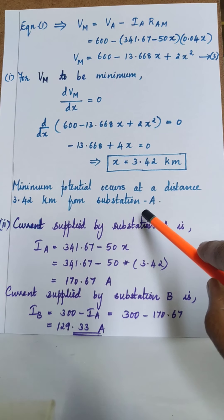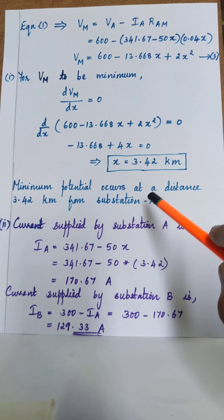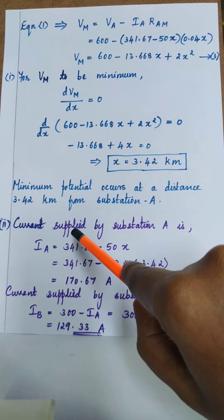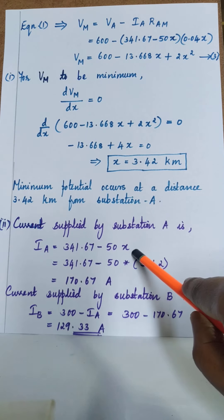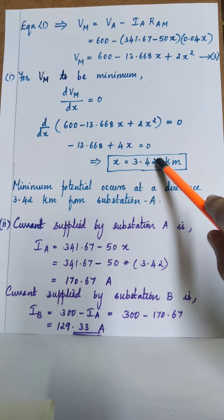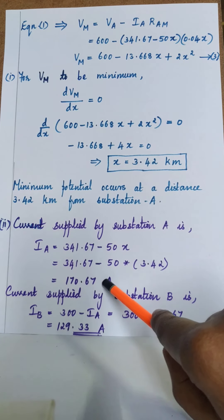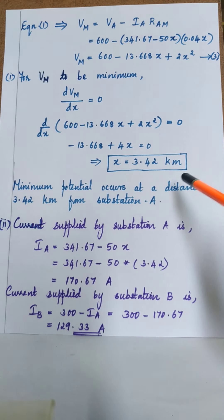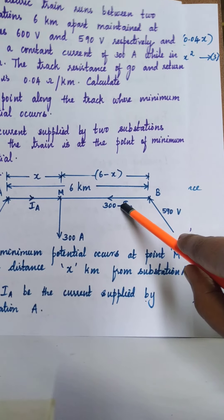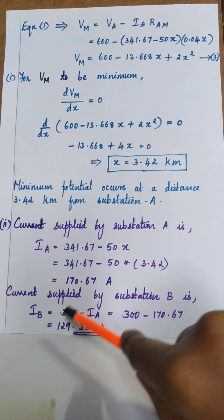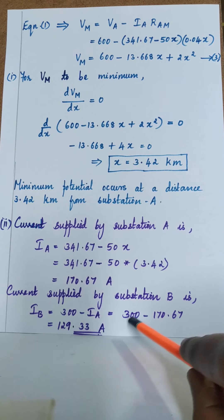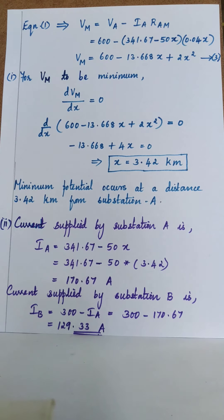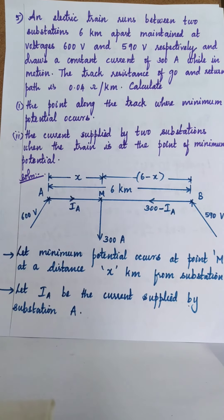For part two, we find the current supplied by both substations at the point of minimum potential. We already have Ia = 341.67 minus 50x. Substituting x = 3.42, the current supplied by substation A is Ia = 170.67 amperes. The current supplied by substation B is Ib = 300 minus Ia = 300 minus 170.67, which gives approximately 129.33 amperes.